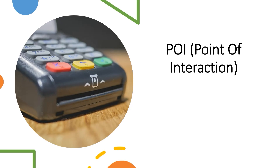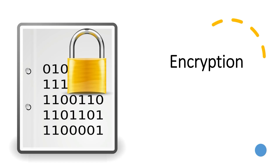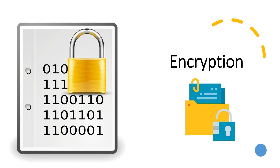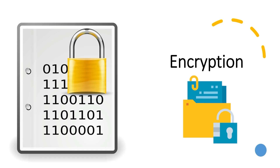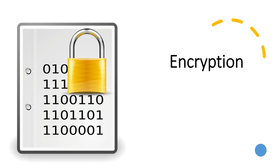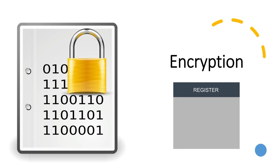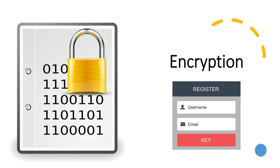Encryption is the process of converting information into an unreadable form except to holders of a specific cryptographic key. If you have a key, with that key you render the information unreadable to anyone else except those with whom you share the key. The process of converting the information back to a readable format is what we know as decryption.